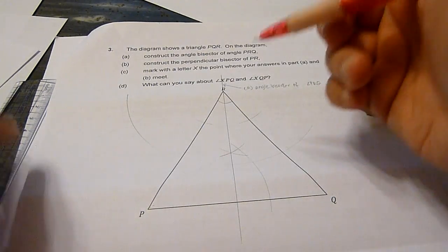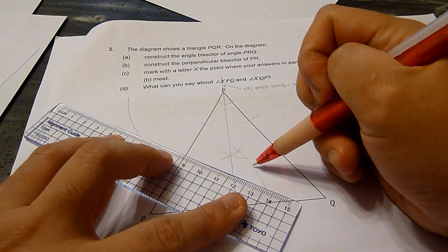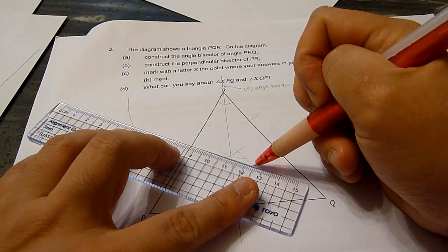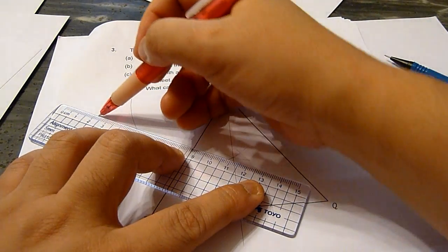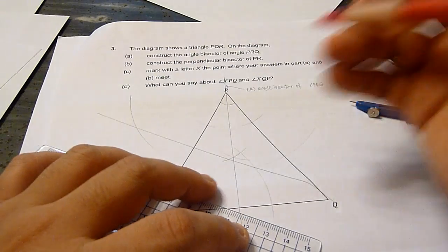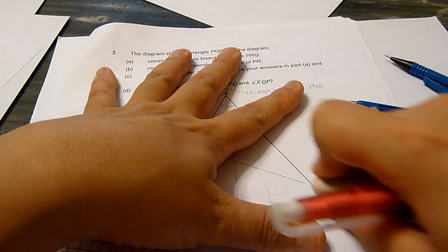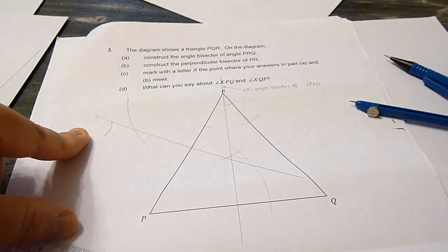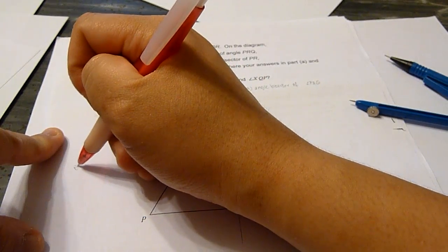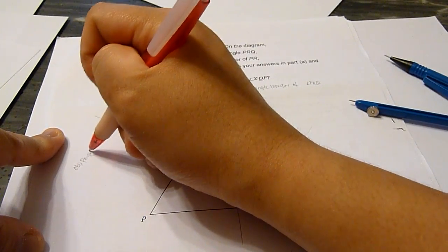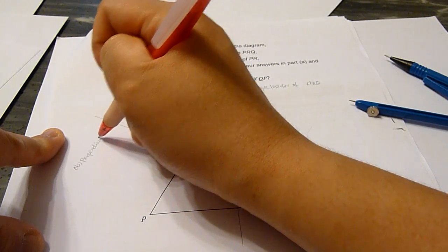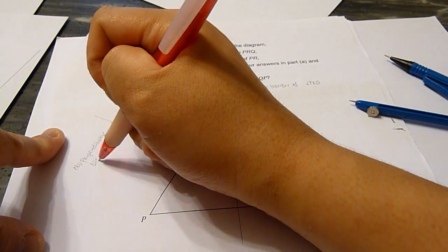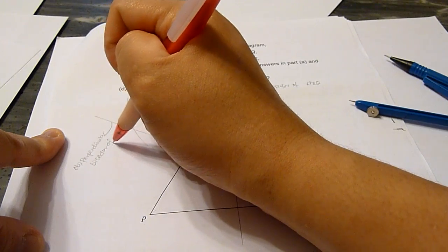And we join the two intersection points together. This will be the perpendicular bisector of PR.